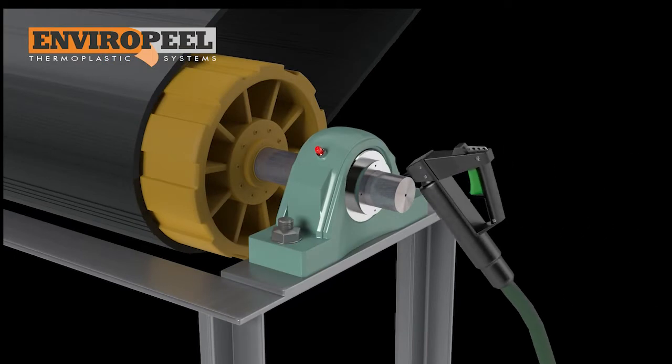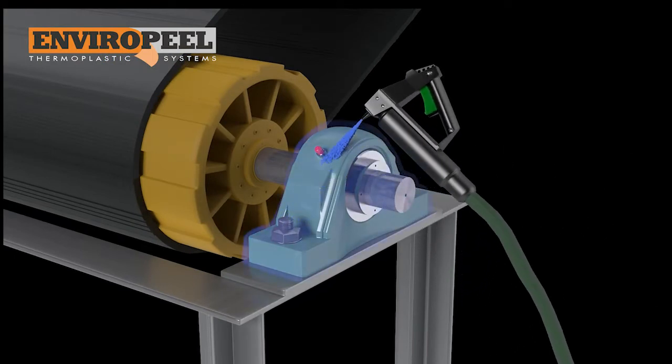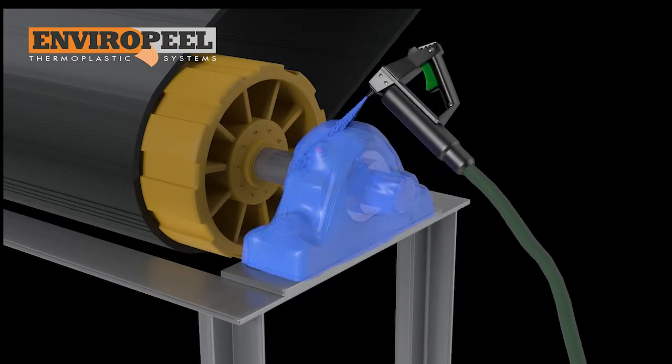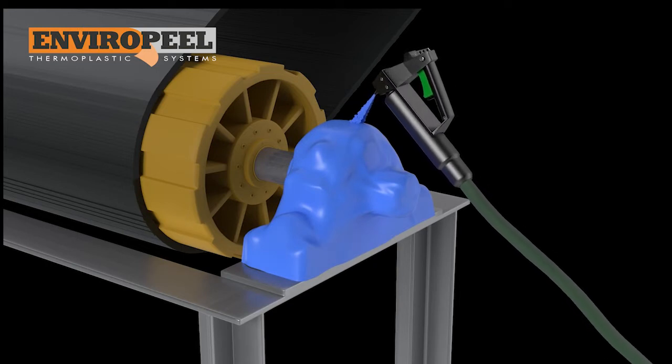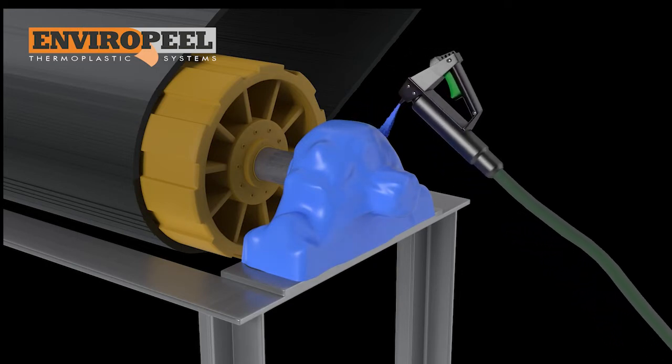The good news is there is a solution to this problem. Enviropeel is a sprayable thermoplastic coating that will protect your bearing seals and housing from contamination.